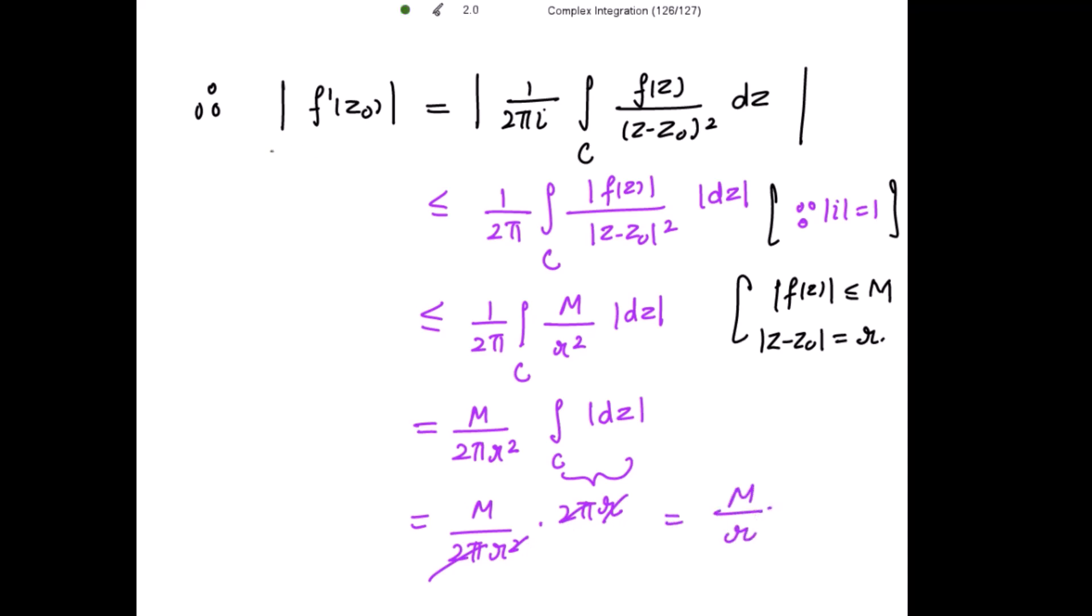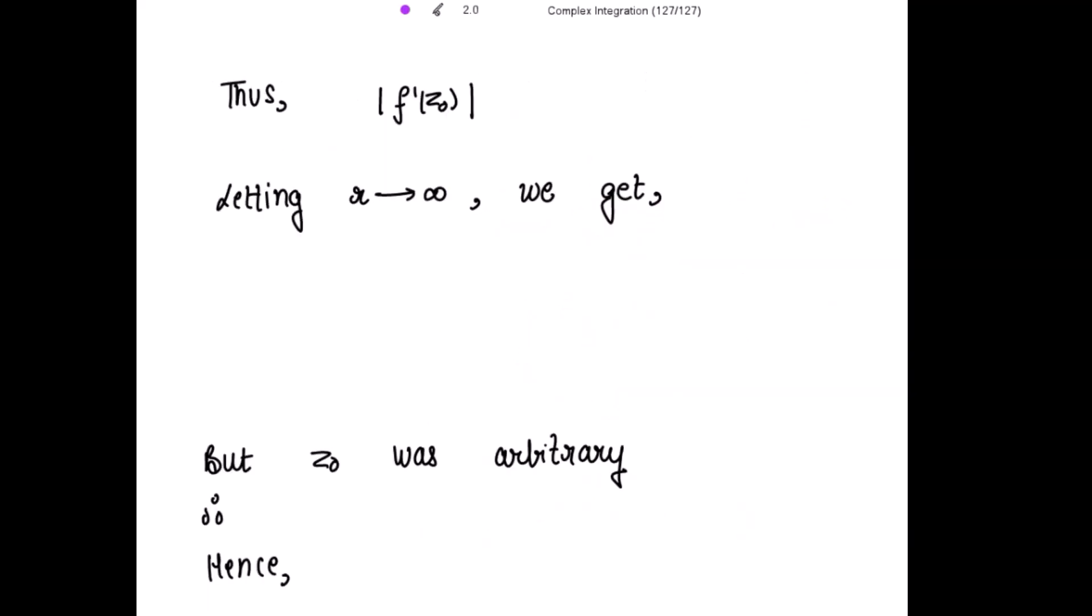So we get mod of f'(z_0) is less than or equal to M over r. So this mod of f'(z_0) is less than or equal to M divided by r.